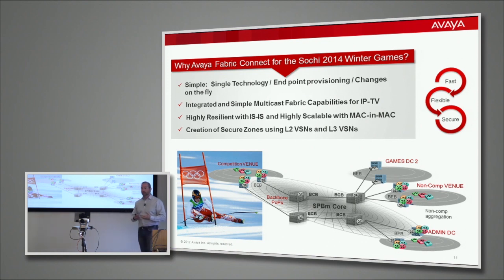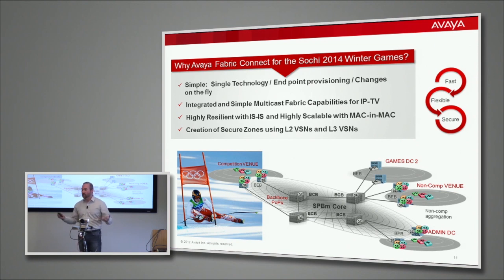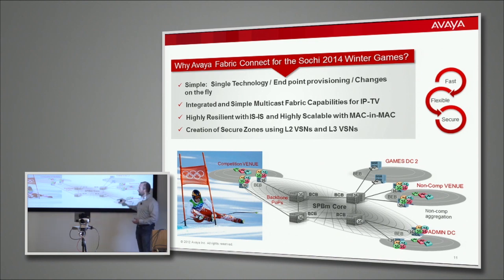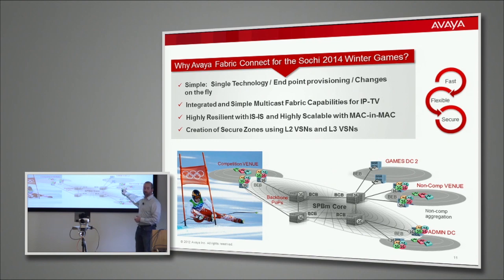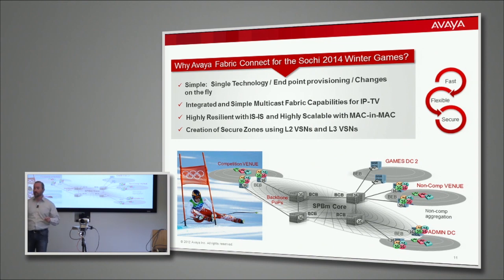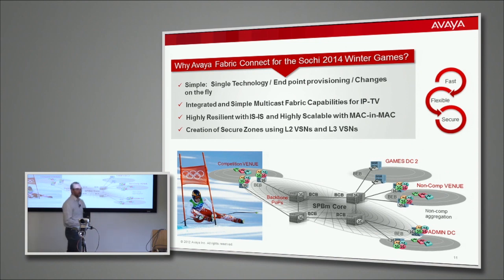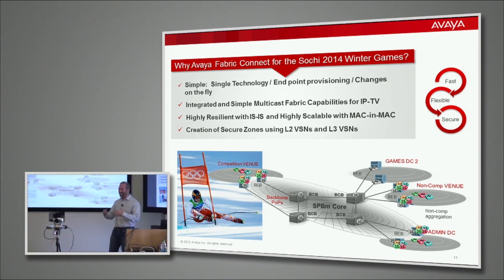SPB is based on ISIS — one of the most scalable IGPs on the planet — so we have all that routing information available. You'll notice these router icons on the edge: that's routing intelligence. These flipped icons are VRFs. We have the ability to reuse the ISID as a VRF ID, meaning we deploy VRFs without the need for BGP. There are no route targets, no route distinguishers. Just like the LAN extension: VRF blue ISID 22 on one side, VRF blue ISID 22 on the other — the VRF is done. We're actually going to show you a live CLI demo of this.